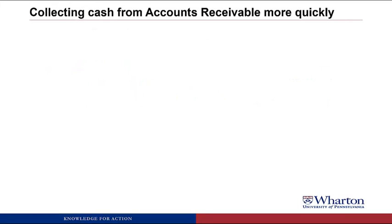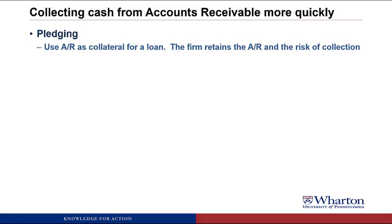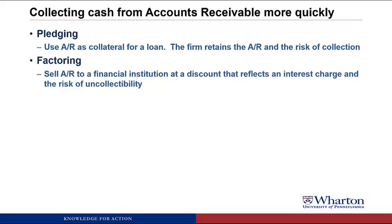The last topic is the different methods companies can use to collect cash from their accounts receivable more quickly. The first method is pledging the accounts receivable as collateral for a loan. Instead of waiting for customers to pay, you can go to a bank and borrow money today with those accounts receivables as collateral. You would still have the accounts receivable and must collect them to repay the bank loan; if you default, the bank would seize the receivables as collateral. In this case, the company is taking the risk of collection, which they may not want to do.